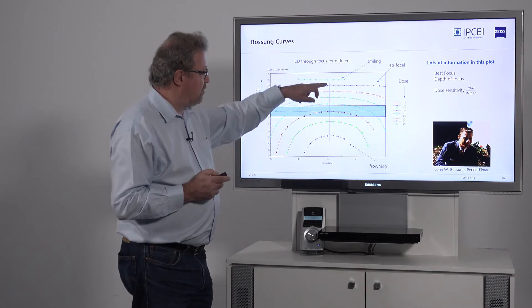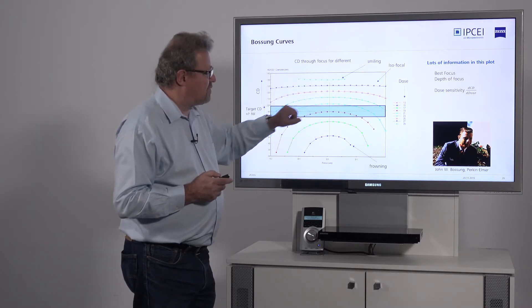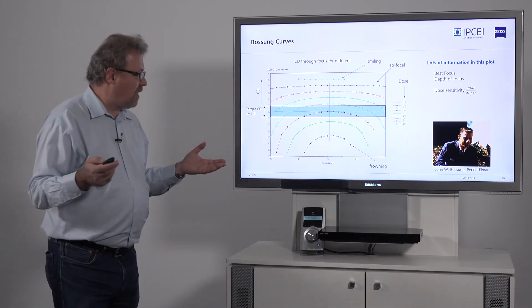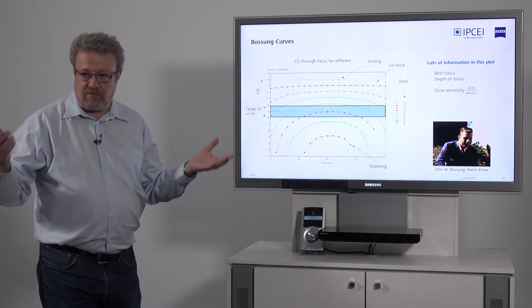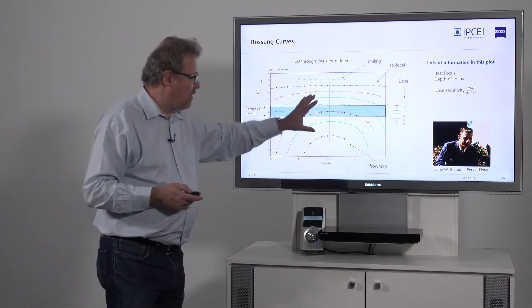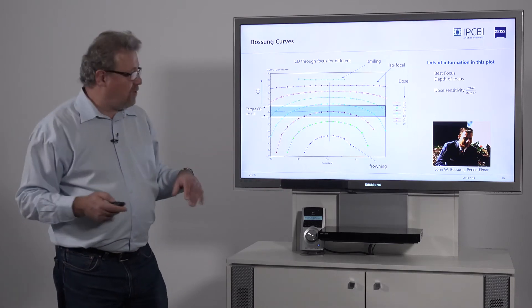The separation between each of those curves tells you about the dose sensitivity. You would like to have a process that does not have large dose sensitivity, because if it has large dose sensitivity and you have dose variations, you have a problem. If those curves are closer together, it's better for you.